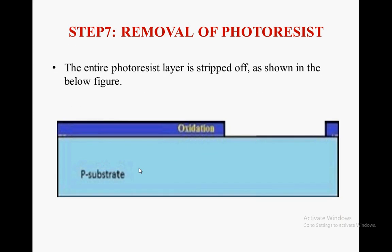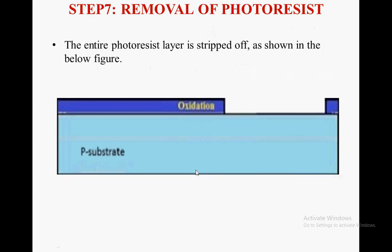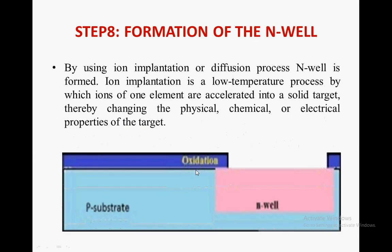Step 7 is removal of photo resist — the entire photo resist layer is stripped off completely, as shown in the figure. Next is formation of the N-well by using ion implantation or diffusion process. Ion implantation is a low-temperature process by which ions of one element are accelerated into a solid target, thereby changing the physical, chemical, and electrical properties of the target.